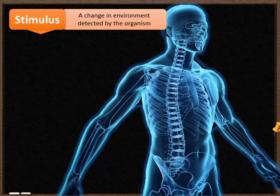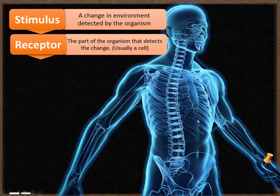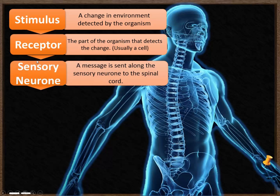Let's think about how this actually works during a reflex action. The example we'll use is a pin touching your skin, causing your arm to move away — that's a reflex action, an unconscious response. The stimulus is the pin touching your skin, and that's detected by receptors in the skin, such as pain receptors. That then sends a signal along the sensory neuron — because we've just sensed something — and that electrical impulse travels to the spinal cord.